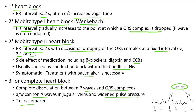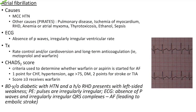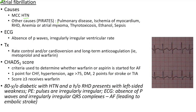Atrial fibrillation: the most common cause is hypertension. Other causes (mnemonic PIRATES): pulmonary disease, ischemia of myocardium, rheumatic heart disease, anemia or atrial myxoma, thyrotoxicosis, ethanol and sepsis. ECG shows absence of P waves and irregularly irregular ventricular rate, indicated by varying RR intervals. Treatment involves rate control and cardioversion, and long-term anticoagulation — metoprolol and warfarin.